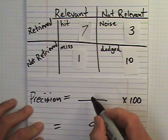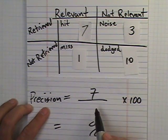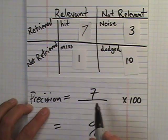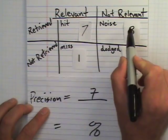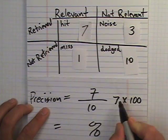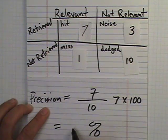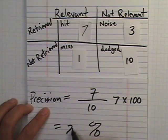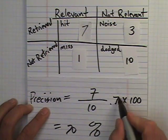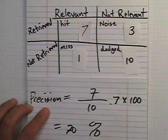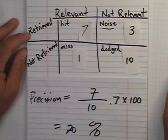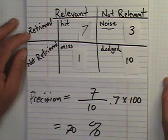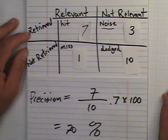So in this case, seven, always on top, over the total number retrieved, which in this case was 7, 8, 9, 10, gets you 7 over 10 is .7, 70%. So that's 70% precise. So precision and recall, complementary and give you an interesting ratio. You're never going to get perfect results in both precision and recall.